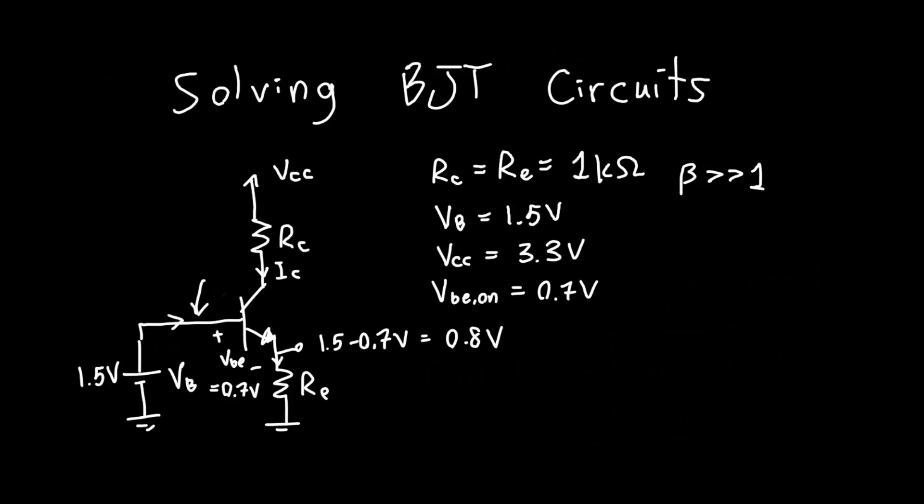We know that the current flowing through this resistor RE must just be equal to 0.8 volts divided by RE, or in this case 1 kilo ohm. So we get 0.8 milliamps. Since we're assuming that beta is much greater than one, the base current is zero, and the current flowing through the collector is exactly the same, 0.8 milliamps.